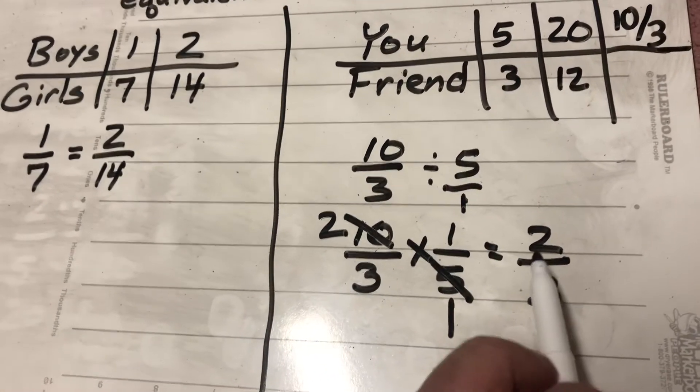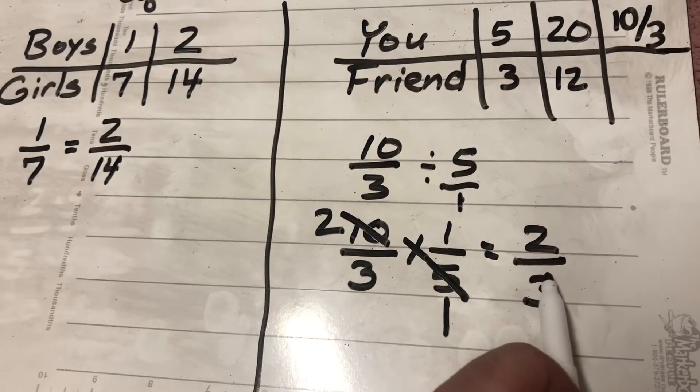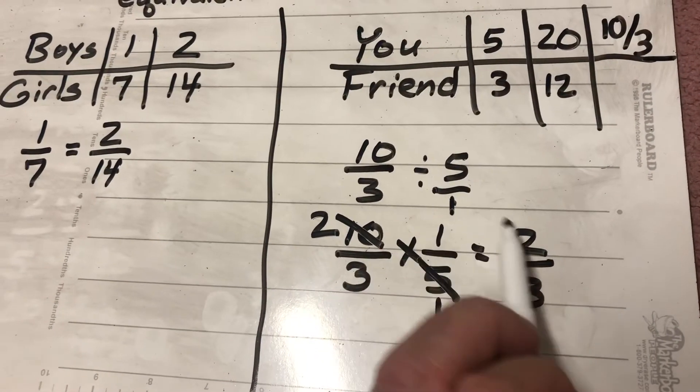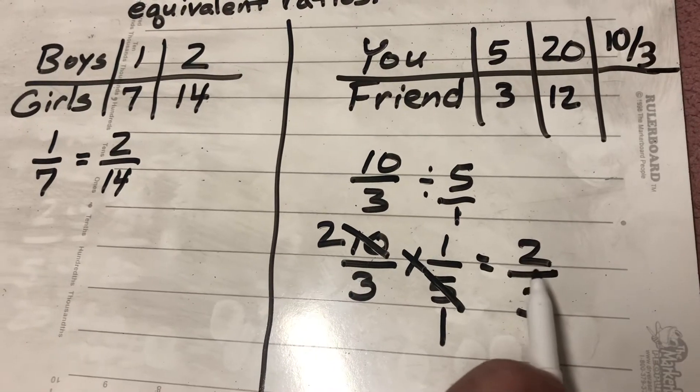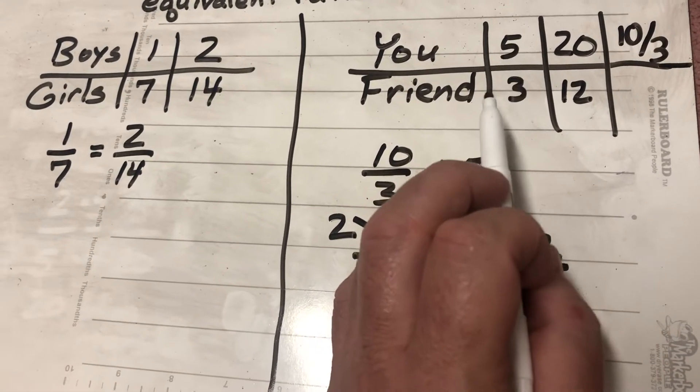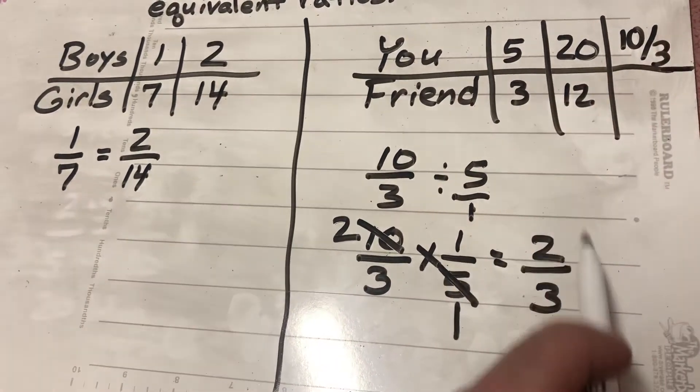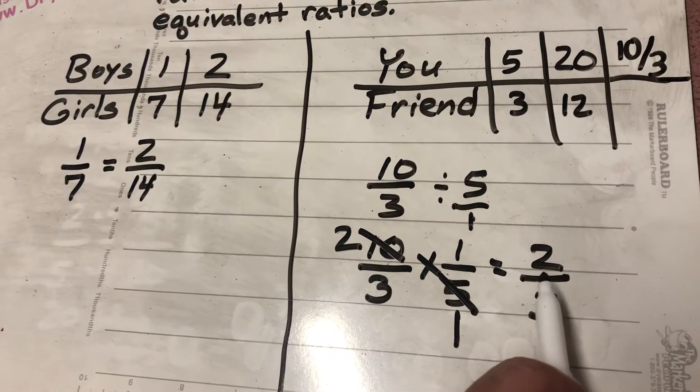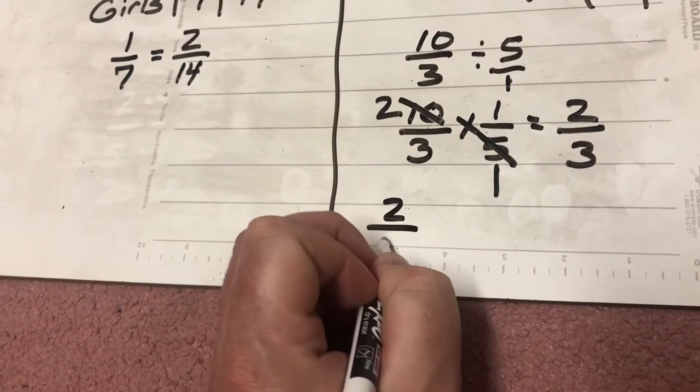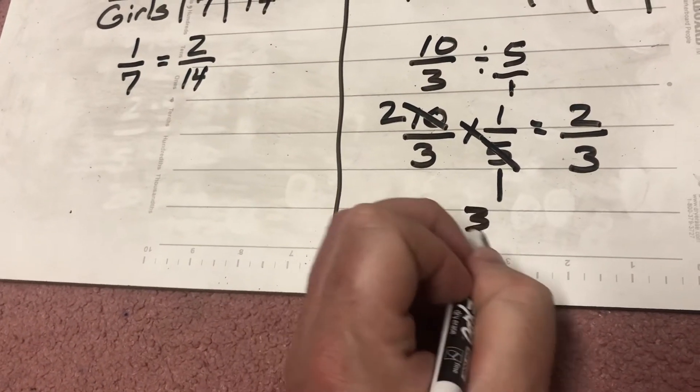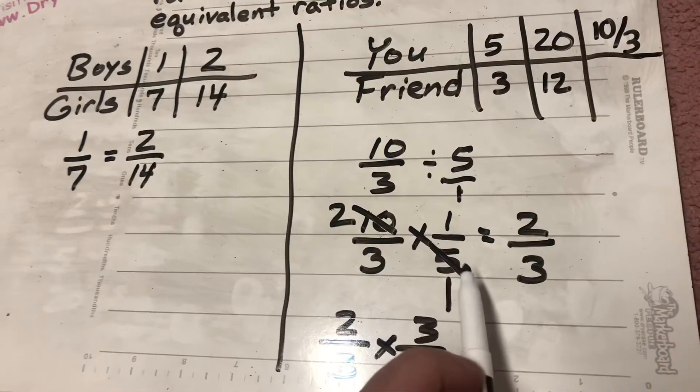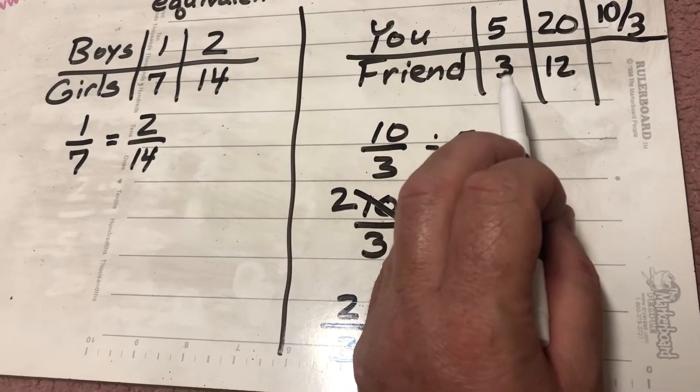So I find that 1 part is 2 thirds. That's the 5 parts. This is the 1 part. Now every part is worth 2 thirds. Now I know for every 5 parts I have, my friend has 3. And since I have 5 parts, I need to figure out what 3 parts are. So now I'm going to have to take that 2 thirds and multiply it by 3 over 1, because I'm going to multiply it by 3, because your friend has 3 parts.